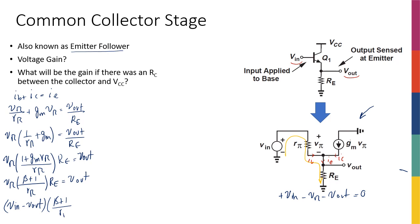So I can write this as Vin minus Vout times β+1 over Rπ times Re is equal to Vout. So this means that Vin times β+1 over Rπ times Re is equal to Vout times 1 plus the same thing, β+1 over Rπ times Re. So I'm going to take the common denominator on both sides, or actually on the right side only.